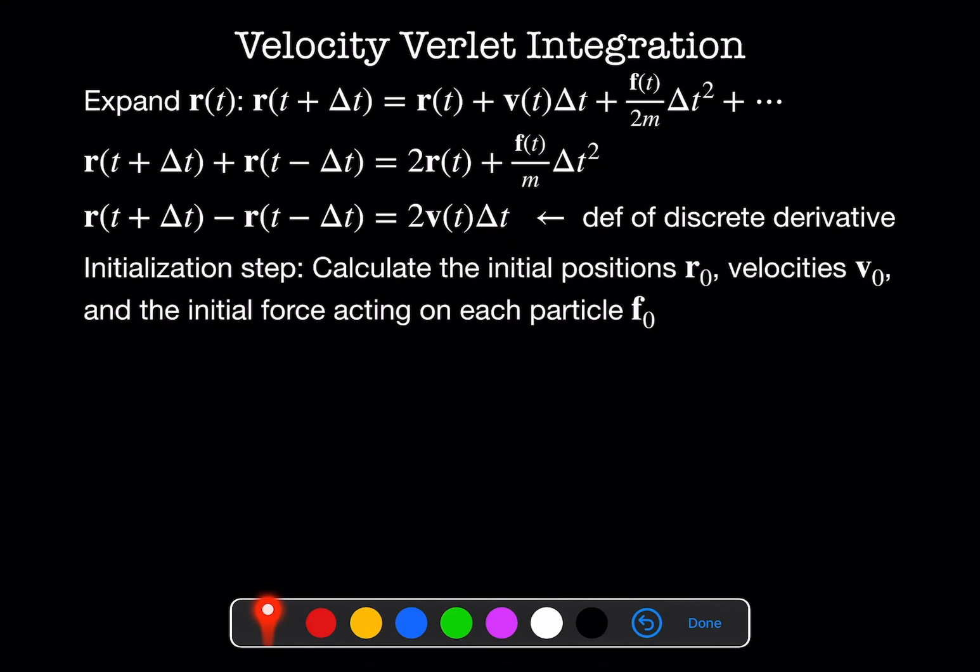We're going to do an initialization step. So first, we're just going to calculate all the initial positions, the initial velocities, and the initial force acting on each particle. And then we're going to run our integration step. It's a little bit of a strange integration step. But the point of it is that it's trying to keep the total energy fixed at every point. So if my delta t is too big as I go through this, I might end up changing my kinetic energy.